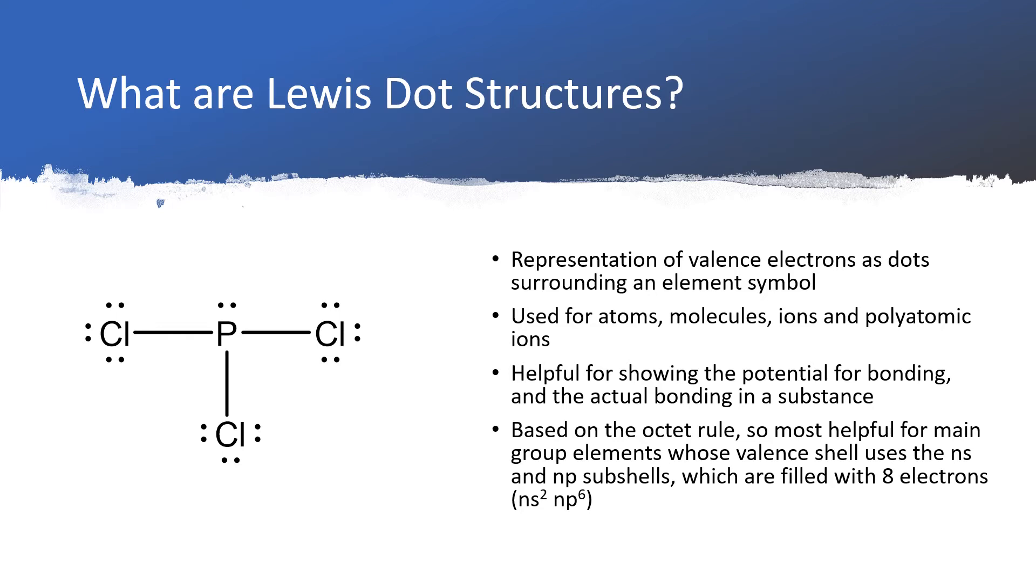The whole idea here is based on the octet rule, so it works best for main group elements as we're going to fill their valence shell with eight electrons, two in the S subshell and six in the P subshell.